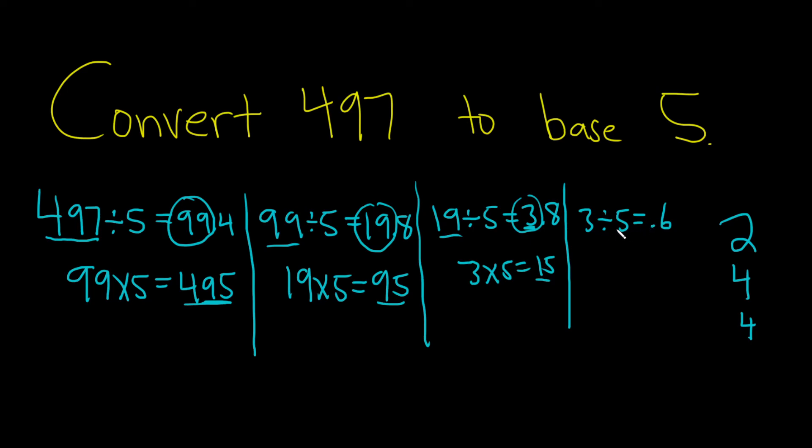Because 5 goes into 3 zero times and the remainder is 3. It doesn't go in at all, so the whole thing is the remainder.